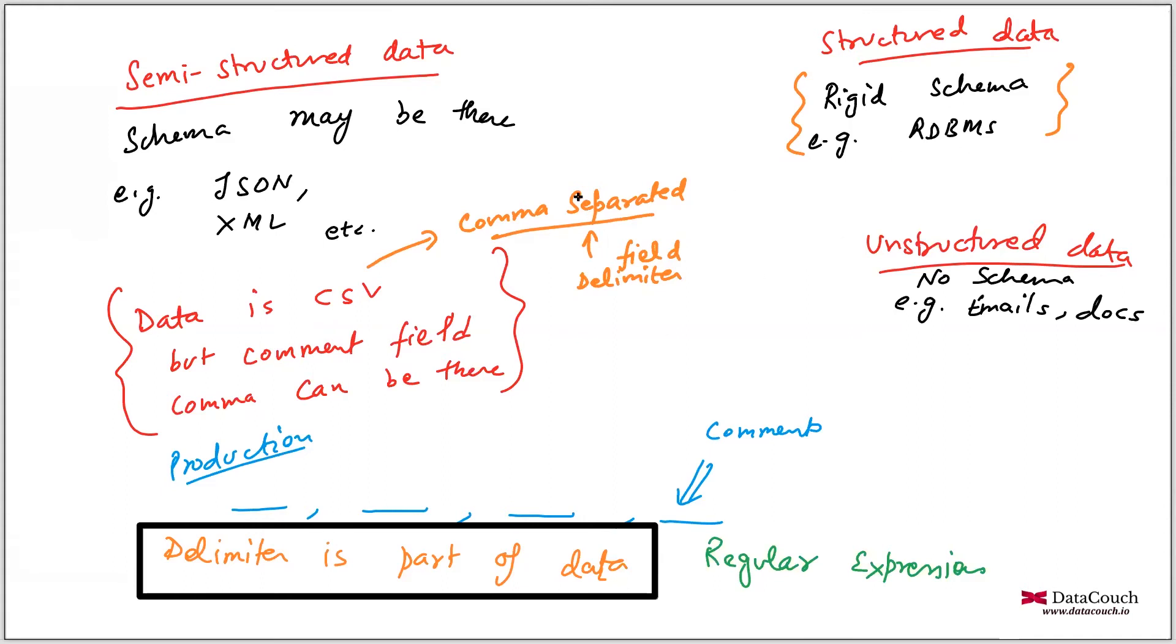Another example is CSV data is structured, but it will maybe have a header also, and you have maybe some schema and you are inferring schema from the header, so these things are there.